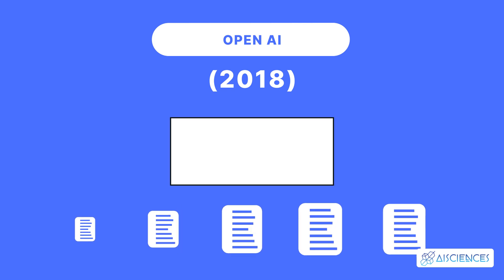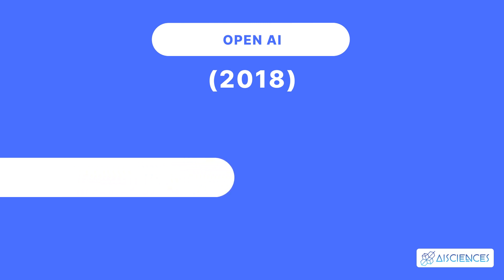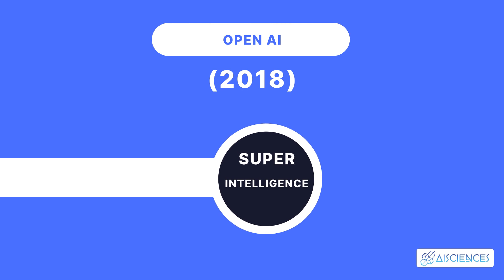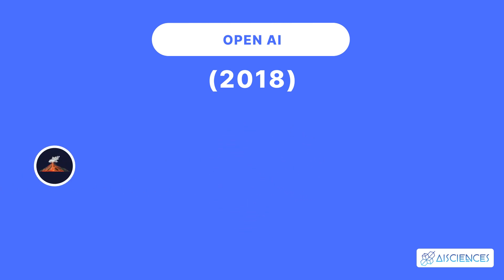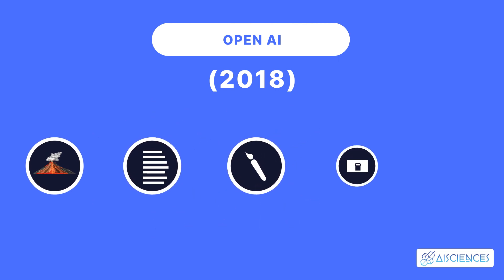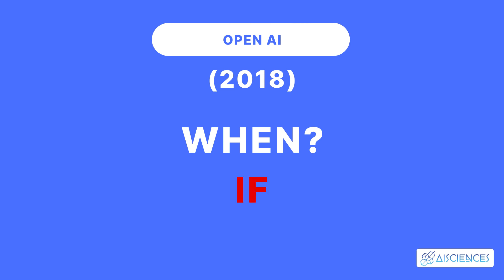Thanks to many breakthroughs such as these, many new AI milestones are being attained every year. The possibility of witnessing superintelligence over the next few decades is real. With AI expected to predict earthquakes, write literature, create artwork, decipher Vatican's secret archives, or drive fully autonomous cars, superintelligence is simply a question of when and not if.